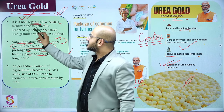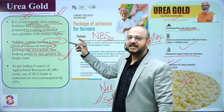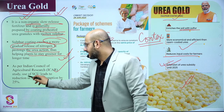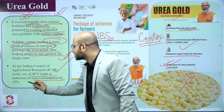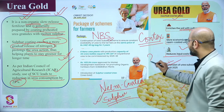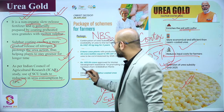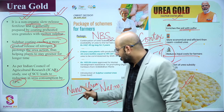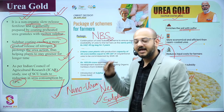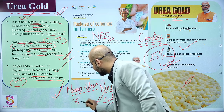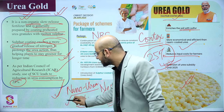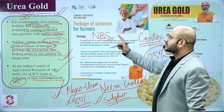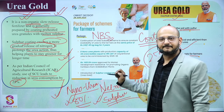It is a non-organic slow-release fertilizer, generally prepared by coating preheated urea granules with molten sulfur. As per the ICAR study, use of sulfur-coated urea leads to a 25% reduction in urea consumption. Along with that, you should also know about nano urea. Many plants are being set up for nano urea. It is cost-effective, and its effectiveness is 80% compared to 30% for normal urea — 50% more effective. One plant is in Kalol, Gujarat.